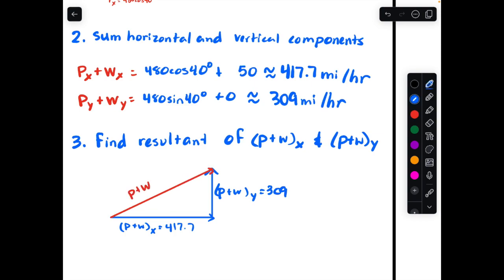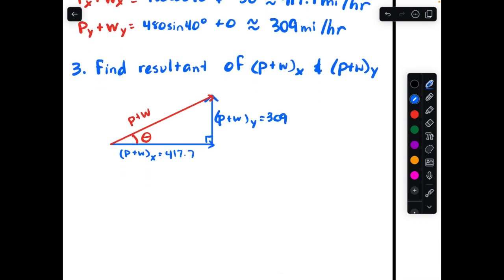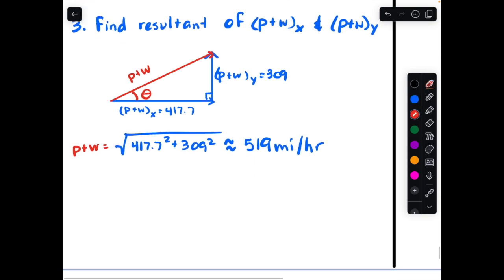P plus W is what the question was asking me for. I need to know both the magnitude and the direction of this vector. Magnitude, not too bad. This is a right triangle. You know two of the three sides. I do all that, I get about 519 miles per hour. In a math context, I always want to use an approximate equal sign. Magnitude, okay.